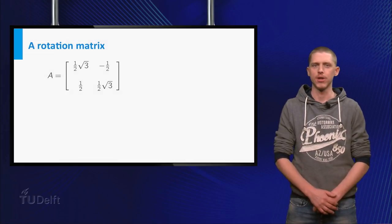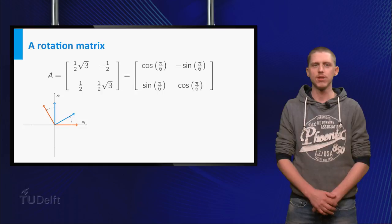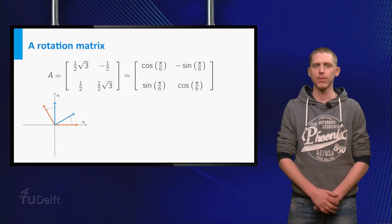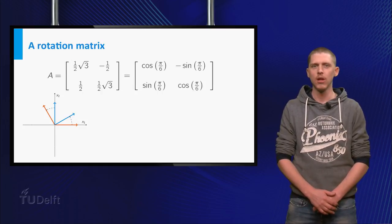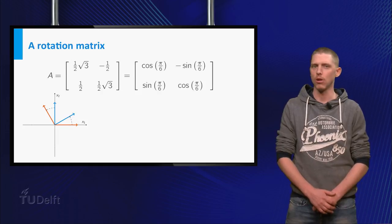First consider the shown matrix A. This matrix is the standard matrix of the linear transformation that rotates a vector over 30 degrees counter-clockwise.